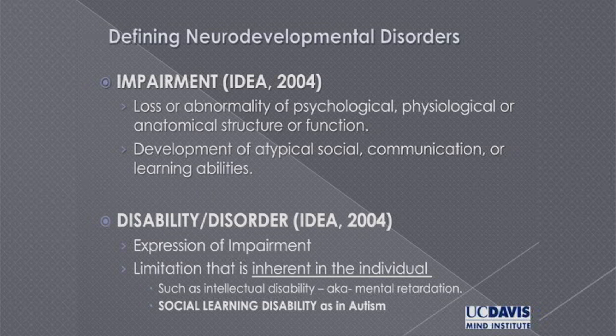With autism, what would you say the impairment is, and what do we say the expression is? Unless we can answer those two questions for schools and teachers, it's going to be very hard for us to make progress in serving children with autism. I'm going to take a shot at that today. I'm going to say that the problem for children with autism is that they have a very difficult time adopting the same point of view as someone else. That's in large part a social attention problem, and it leads to social learning disability — difficulty in acquiring information from another person.